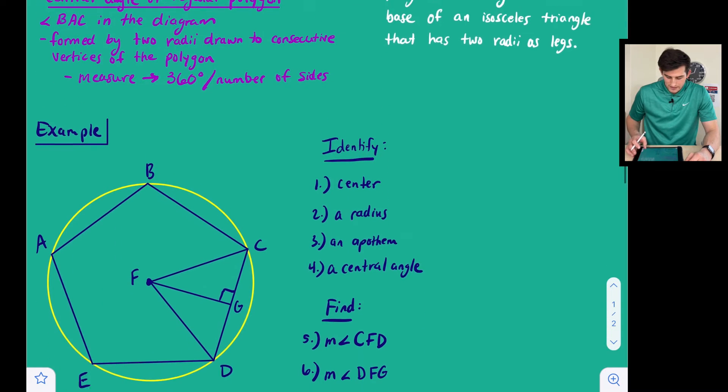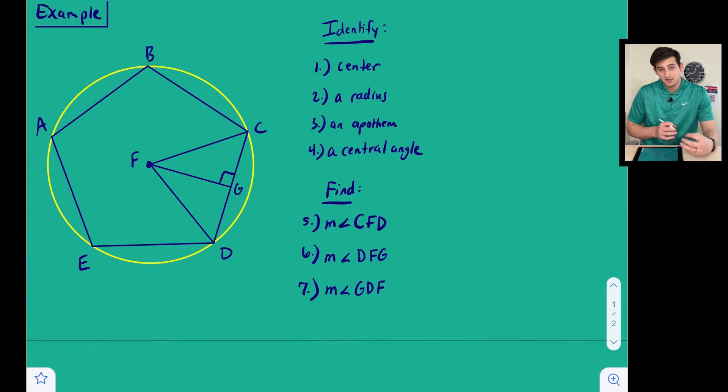We're going to look at one example where we have a regular pentagon inscribed into our circumscribed circle, and we're going to identify four things: the center, the radius, the apothem, the central angle, and then we're going to find three measures associated with this regular pentagon.